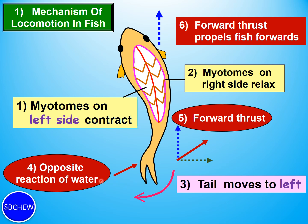As the tail sweeps left against the water, Newton's law applies: every action has an equal and opposite reaction. The water pushes back on the tail, and this reaction force can be divided into a forward thrust and a lateral thrust. It is the forward thrust that propels the fish forward.